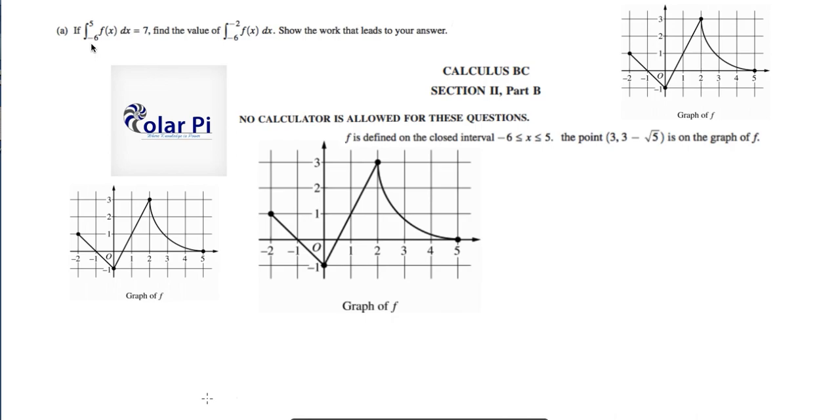Now we know that the integral from negative 6 to 5 of f is equal to the integral from negative 6 to negative 2 of f plus the integral from negative 2 to 5 of f. So knowing that, we see that what we're asked to find is equal to the integral from negative 6 to 5 of f minus the integral from negative 2 to 5 of f.